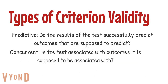Concurrent validity is similar to predictive validity, except it's not predicting anything. It's relating results to outcomes that are available when the test is being taken — it's not looking into the future. So for example, if Fishbein, a third grader, takes Ball's intelligence test and scores really high, Fishbein should have mostly A's on his report card, according to Ball's intelligence test.